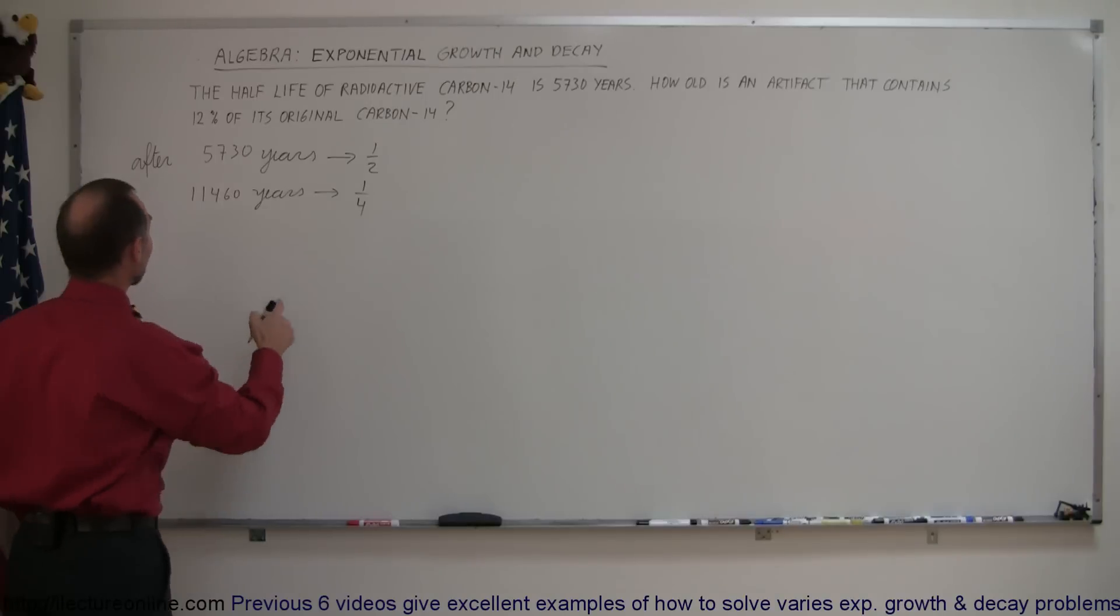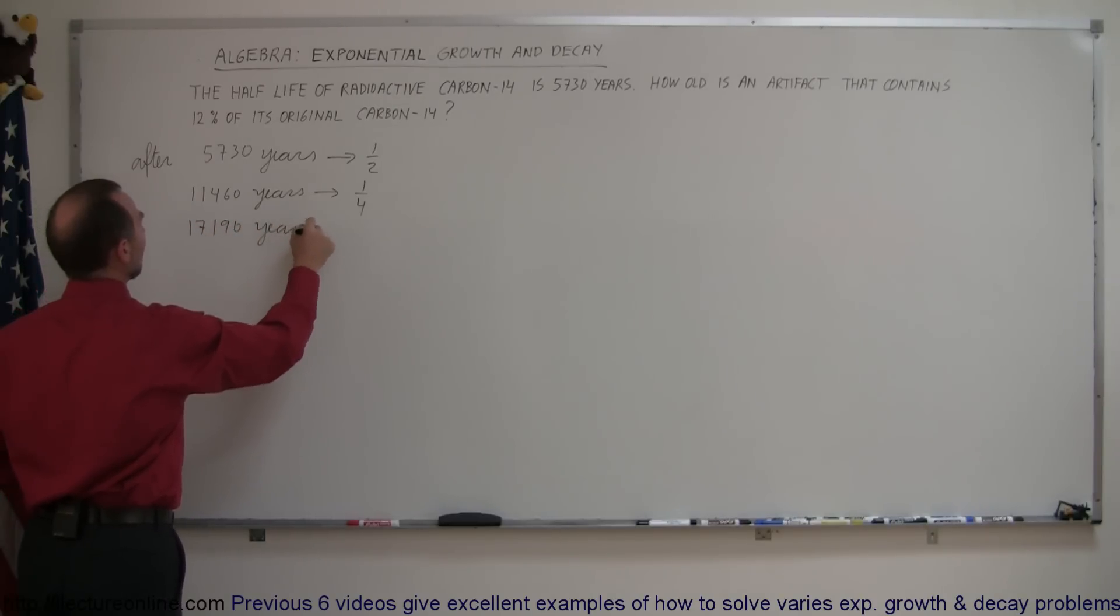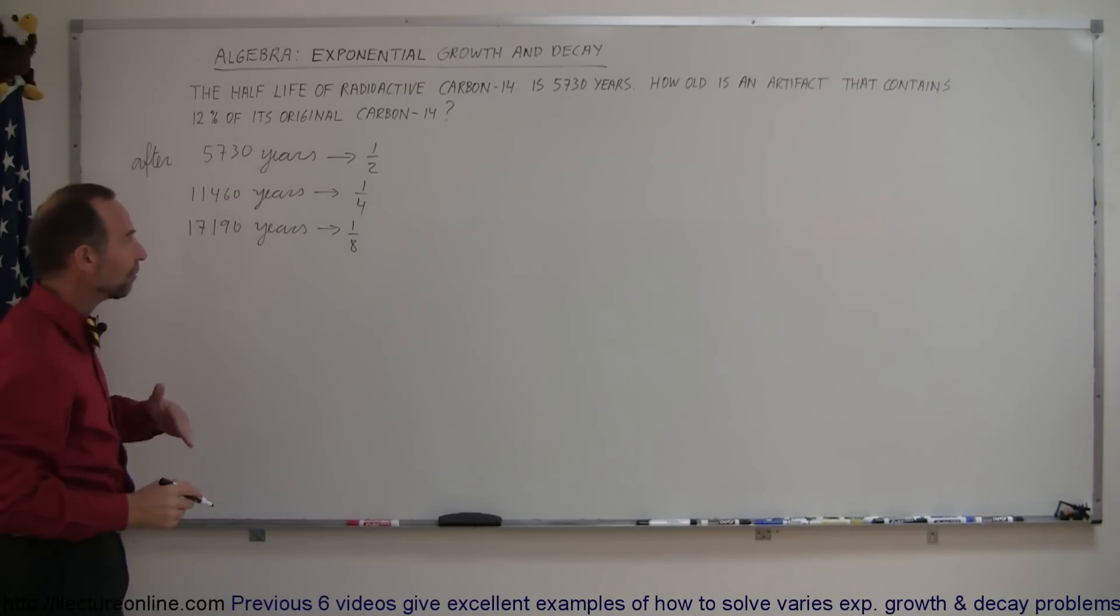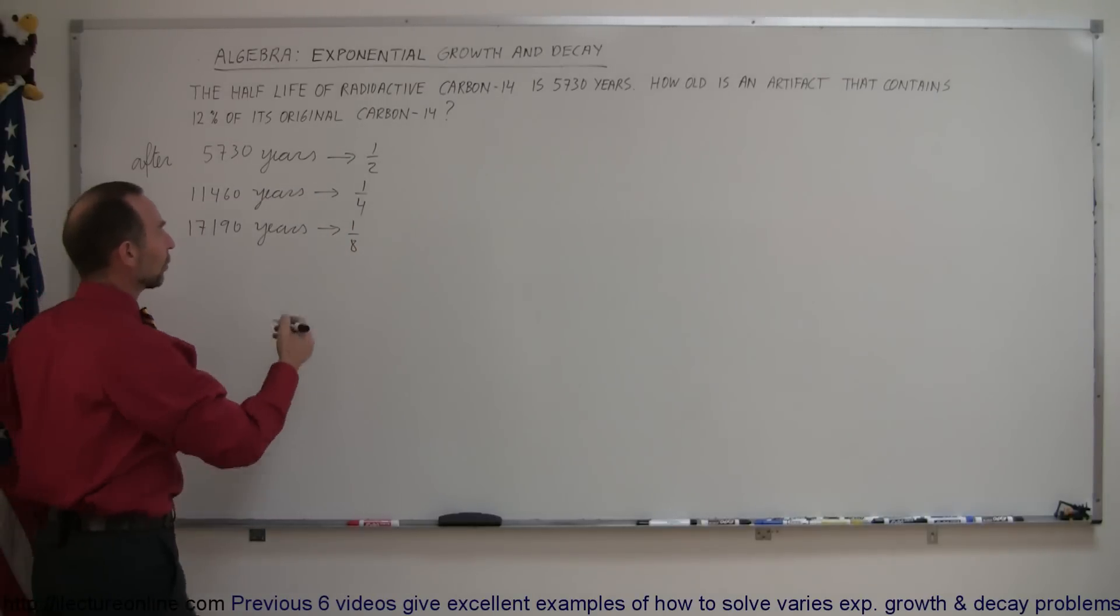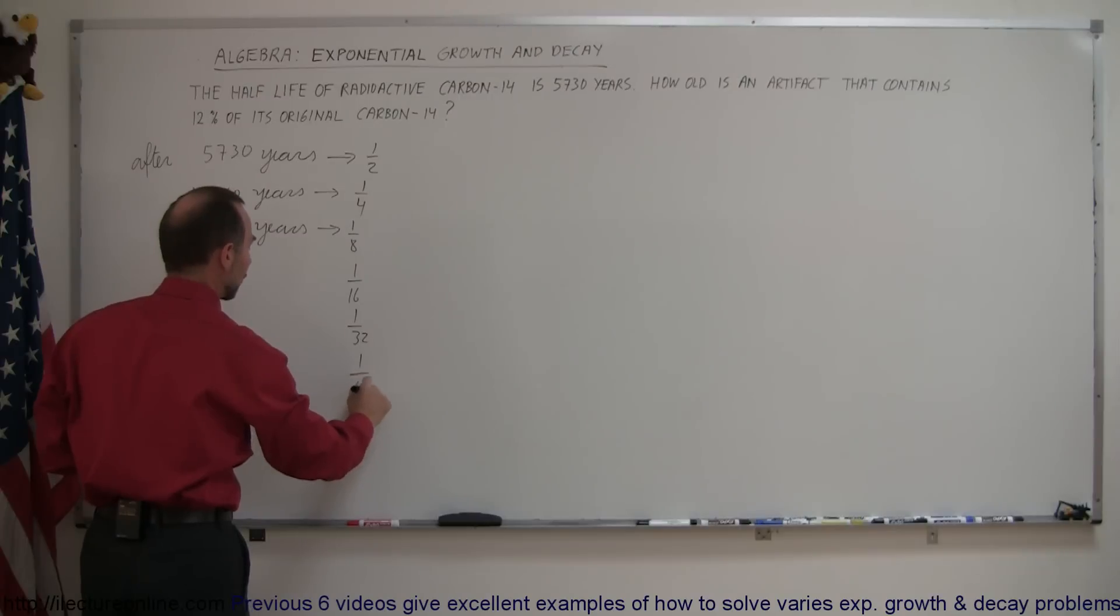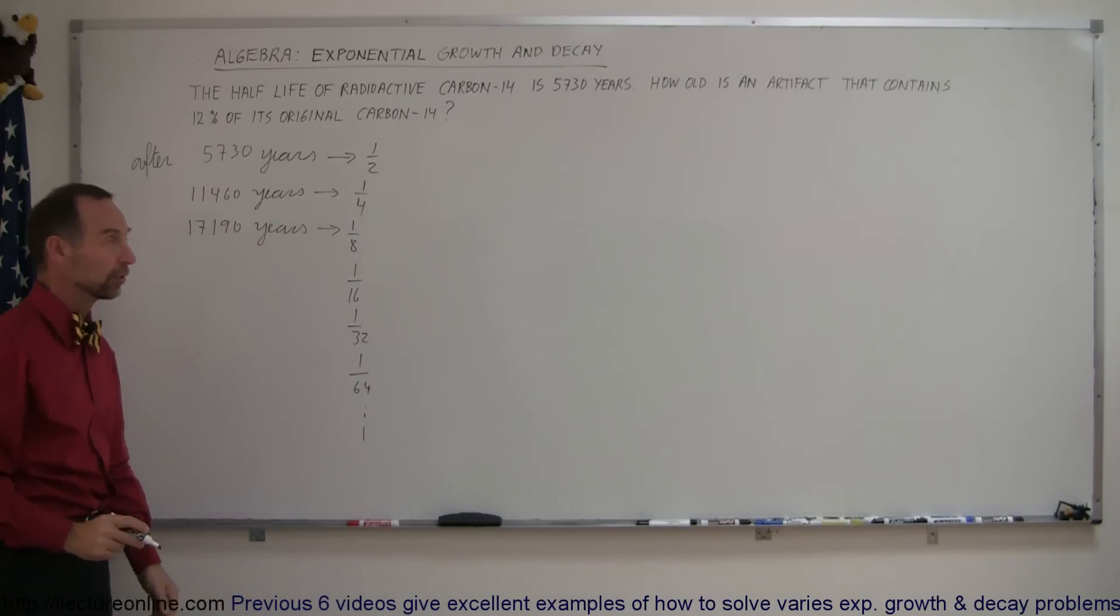And after another half-life, add another 5,730 years to that, so it would be 17,190 years, now you only have one-eighth of it left and so forth. So every one half-life of the radioactive material, you lose one half of what you had before, so now you're down to 1/16th, 1/32nd, 1/64th, and so forth, every 5,730 more years.